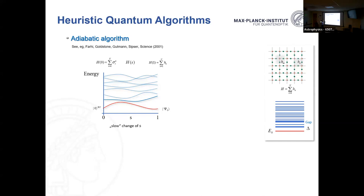One such algorithm is the adiabatic algorithm, based on the adiabatic theorem. The idea: you want to solve some target Hamiltonian, but you know the ground state of a simpler Hamiltonian — for instance, a Hamiltonian where qubits don't interact, whose ground state is a product state. Then you interpolate between the two Hamiltonians. You prepare the initial state as the ground state of the known Hamiltonian, then slowly change the parameters. Under certain conditions, you will adiabatically prepare the ground state of the target Hamiltonian.